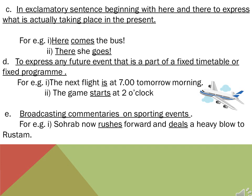In this slide we see again the continuation of simple present tense rules. Number C: in exclamatory sentences wherever they begin with here and there, we actually express what is taking place in the present. For example, number 1: here comes the bus! Here we are using here with an exclamation mark, showing it is sudden information that the action is taking place in the present. Second example: there she goes — right now she is going, so there she goes.